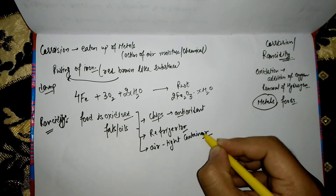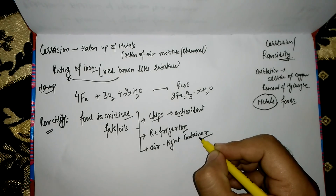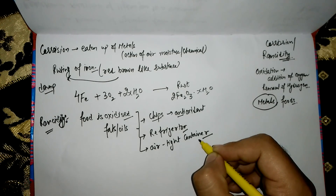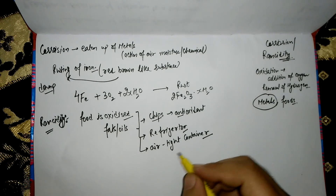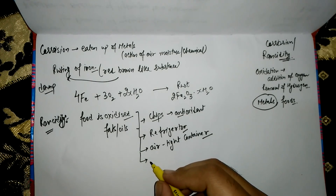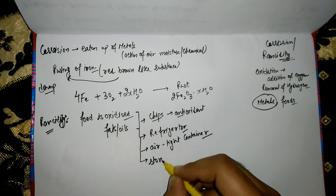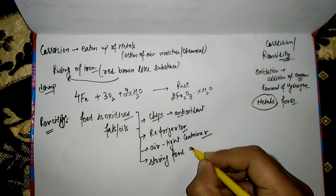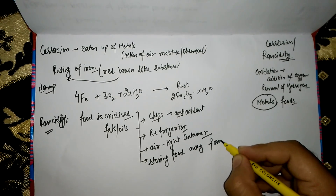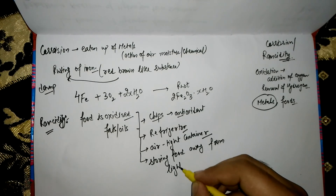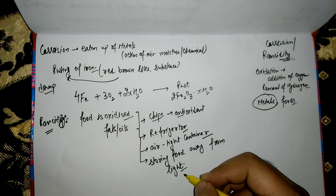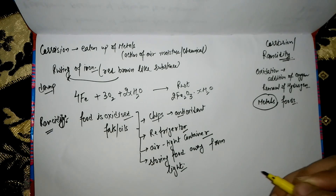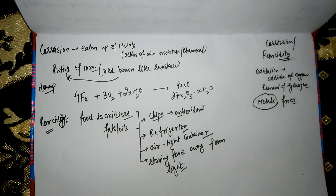Keeping food in airtight containers reduces its exposure to oxygen, so the oxidation of fats and oils in food is slowed down and the development of rancidity is retarded. We can also avoid rancidity by storing food away from light, because keeping food away from sunlight slows down the oxidation of fats and oils, hence reducing the development of rancidity.